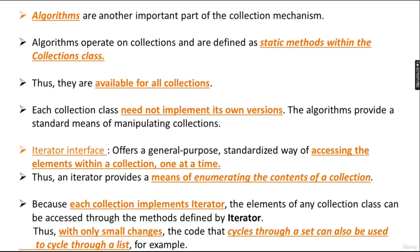The Iterator interface offers a general-purpose, standardized way of accessing the elements within a collection one at a time. It is like a loop — similar to a for loop where you iterate through elements one by one. Thus an iterator provides a means of enumerating the contents of a collection, because each collection implements Iterator.